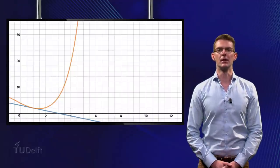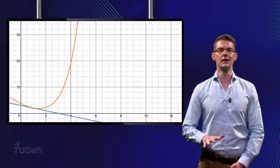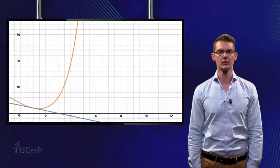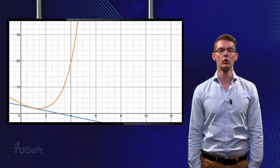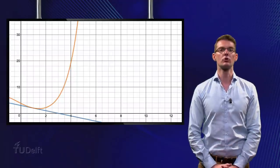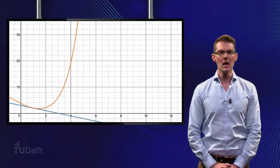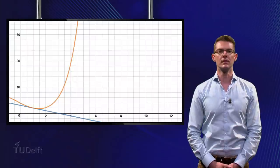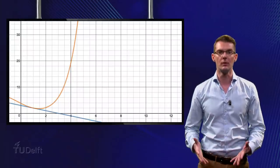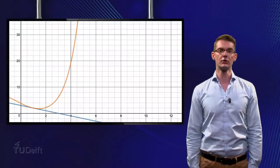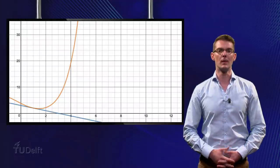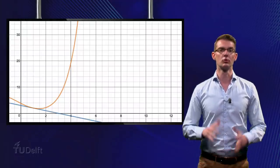The orange graph that you see here is the actual solution of the initial value problem that we started with. The blue line is the Taylor polynomial of degree 1 that we found to approximate this solution. You can see that near x is 1, this line indeed gives you a good approximation. But if x increases, the difference between the approximation and the actual solution becomes larger and larger.